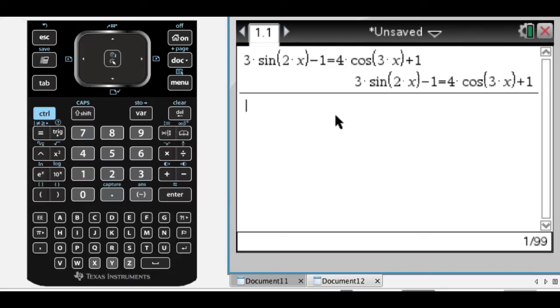Let's say that we want to use our calculator to help us solve a trig equation, and the equation is 3 sine of 2x minus 1 equals 4 cosine of 3x plus 1.